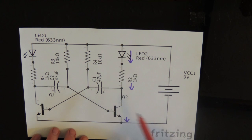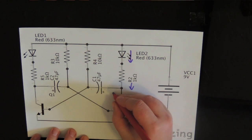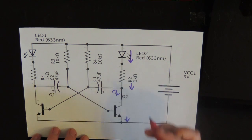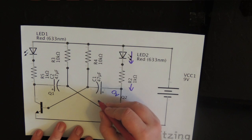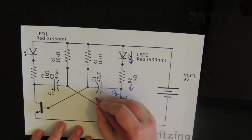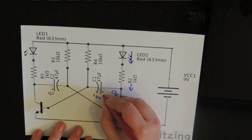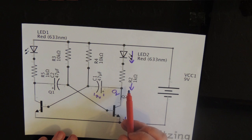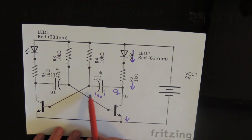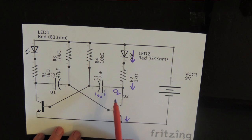Because Q2 now conducts, the voltage at its collector is now 0V. If you remember earlier, we charged this capacitor to 9V, which now means that the voltage of the negative plate of the capacitor is now minus 9V, because the positive is connected to 0.